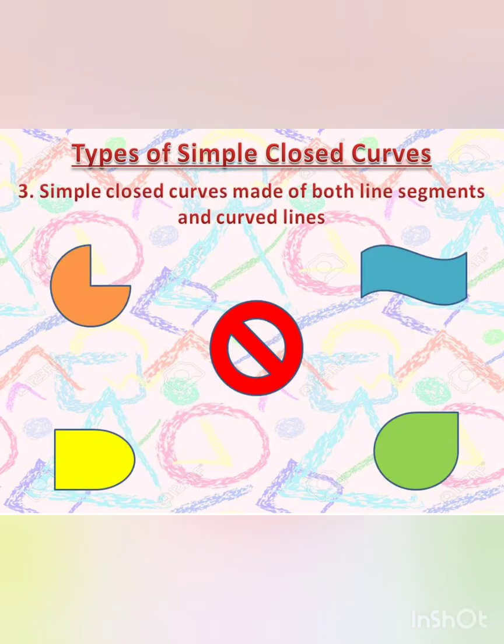Now the third type is simple closed curves made of both line segments and curved lines. Observe the given examples. These figures have straight lines as well as curved lines. Now can you draw some different examples of all the given types? Come on, try and enjoy.